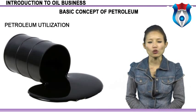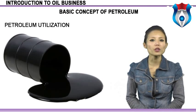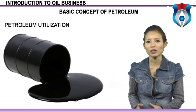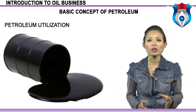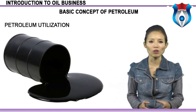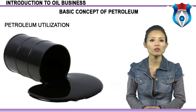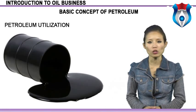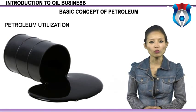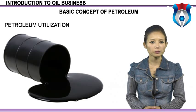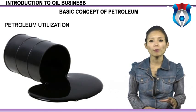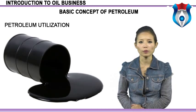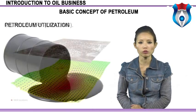Petroleum utilization is a much more complex process than coal utilization. In particular, the preparation of petroleum before it is sold to the consumer is very extensive. The reason for this is that, despite their similar elemental composition, the chemical structure of different crude oils may be very different. Furthermore, a large number of different products are obtained from the petroleum refinery, and most of them are used as fuels.